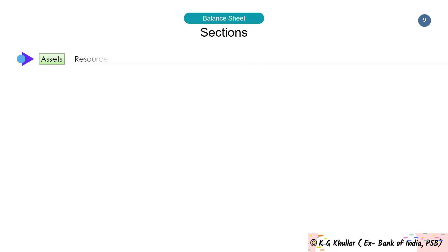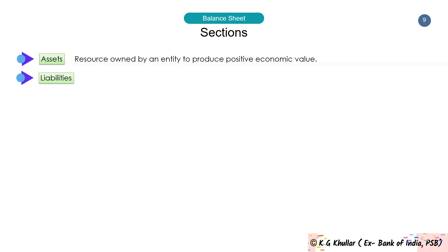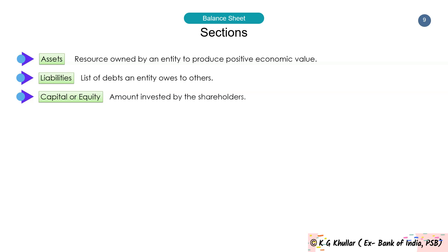The three important sections of any balance sheet are: first, assets — the resources owned by an entity to produce positive economic value; then liabilities — a list of debts an entity owes to others; and finally capital or equity — the amount invested by the shareholders.